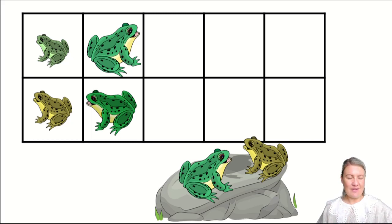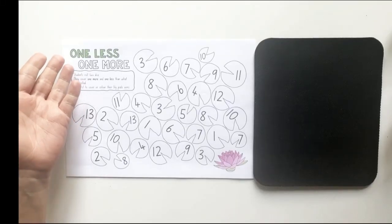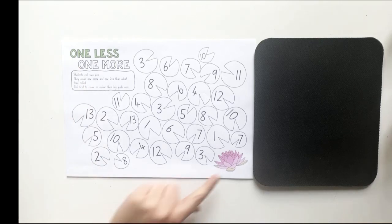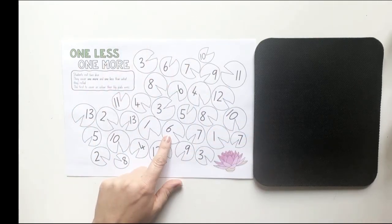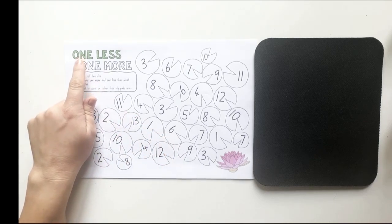Frogs has been a bit of a theme with us today. I have one more activity for you to do today to practice your work with numbers. This activity is called one less and one more, little mathematicians. There are some lily pads on this activity. They have numbers inside of them, but we're working on the skill of one less and one more.